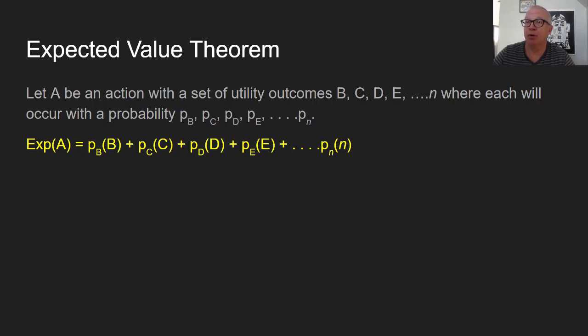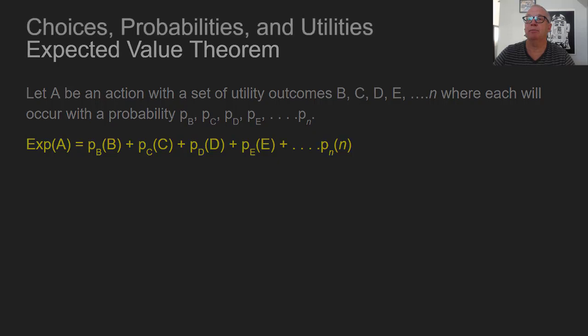I'm mostly going to do examples where we just have two possible outcomes — one or the other thing happens — and the total probabilities add up to one because they're two mutually exclusive outcomes.